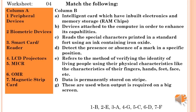OMR, Optical Mark Reader — full form is optical mark reader; it detects the presence or absence of a mark in a specific position — answer is D. Magnetic strip card — data is permanently stored on a chip; this applies to outdated ATM cards or magnetic cards.